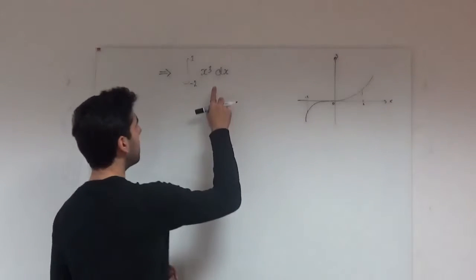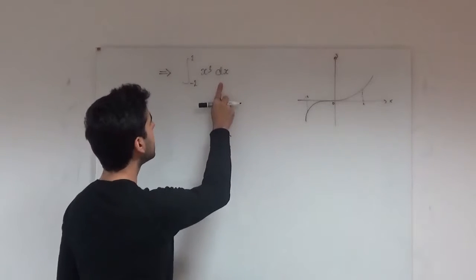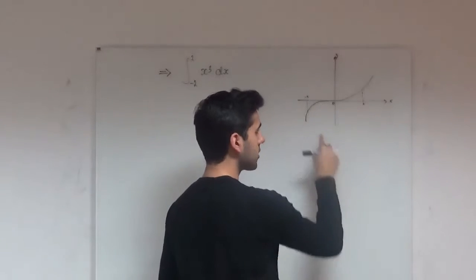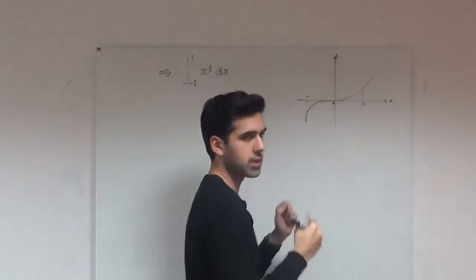So we're going to have the problem of the integral of x cubed with respect to x and we're going to be integrating this over the limits of minus 2 to 2. Now the graph of x cubed looks like this and over the limits between minus 2 and 2 it looks like that.